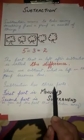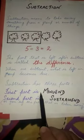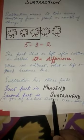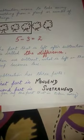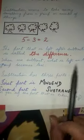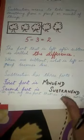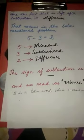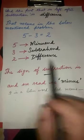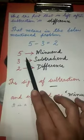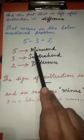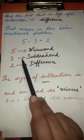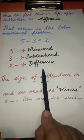Subtraction has 3 parts. The first part is the minuend. The second part is the subtrahend — the part that is taken away. Here 3 is the subtrahend; we are taking 3 trees away from the group of 5 trees. The part that is left after subtraction is the difference. So in 5 minus 3 equals 2: 5 is the minuend, 3 is the subtrahend, and 2 is the difference.